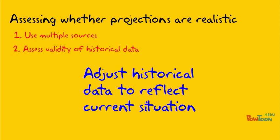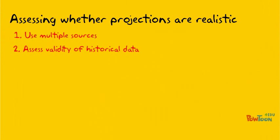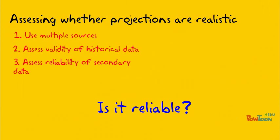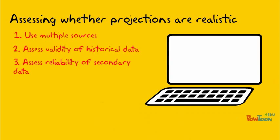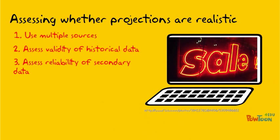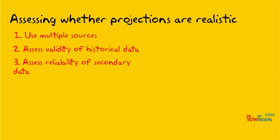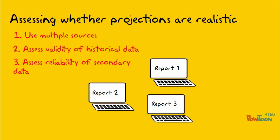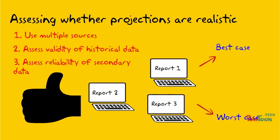If you're using historical data to base a projection on, think about whether the current situation is similar enough to the past for past performance to repeat itself. Maybe your projections need to be adjusted up or down to account for the current situation. If you're using secondary data, how reliable is the source? If you got your projections from only one website that was trying to sell you a service, that data may be biased. If, on the other hand, you found three or four research reports and used the lowest projection as a worst-case and the highest as a best-case, that's more reliable.